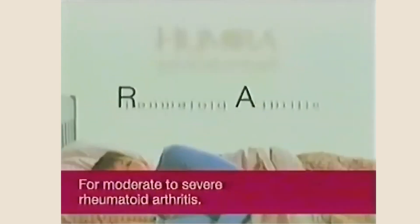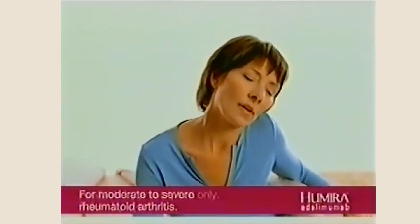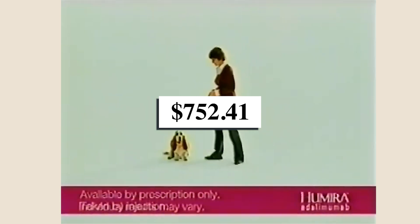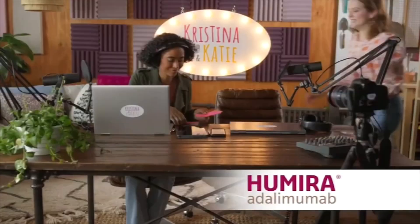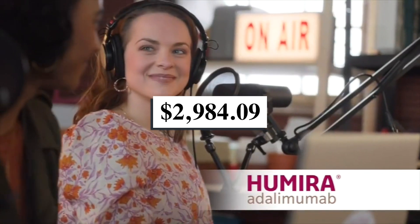Some numbers. In 2003, the average list price for a Humira 40 mg syringe adjusted for inflation was $752.41 per prescription. In 2021, the same syringe rang in at a list price of $2,984.09.